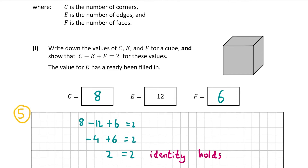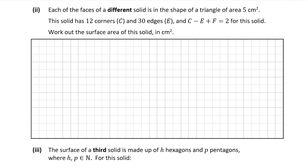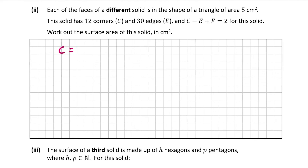Now part B2. The faces of a different solid are all triangles with area 5 centimetres squared. It has 12 corners and 30 edges, and the identity C minus E plus F equals 2 still holds. So C is 12 and E is 30, and we need to find F. Once we find the number of faces, we multiply by 5 centimetres squared to get the total surface area.